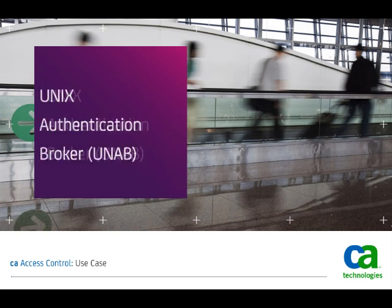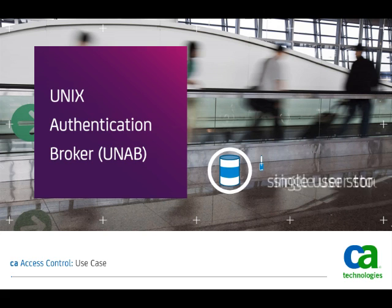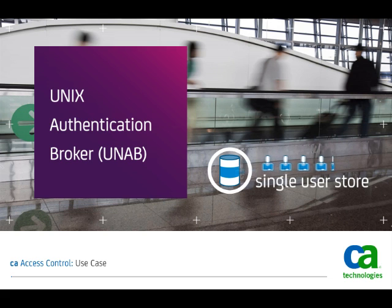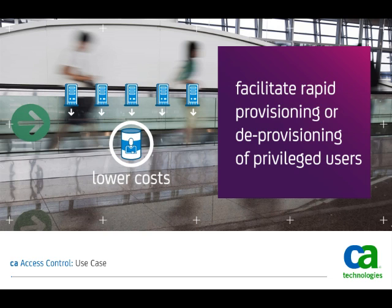Another key integrated feature of CA Access Control is the UNIX authentication broker, or UNAB. UNAB allows your organization to maintain a single user store in Microsoft Active Directory. By eliminating the need to maintain current user stores on each UNIX or Linux server, you can lower management costs and facilitate rapid provisioning or deprovisioning of privileged users.